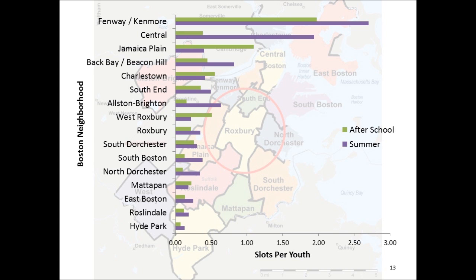Here are the relative slots per youth, broken down by neighborhood and afterschool and summer programming. We need to be cautious about jumping to conclusions from this data. For example, does this mean that Hyde Park and Roslindale have the least programming available for youth? It may simply mean that we have the lowest level of reported programs for those particular neighborhoods. Either way, this prompts a further look and discussion about the lower-ranked neighborhoods to ensure that we are fully collecting data.